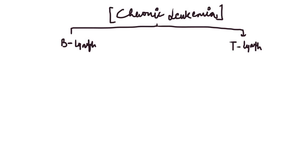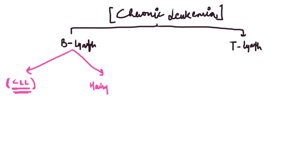From the B-lymphocytes, two types of chronic leukemias arise. These are the chronic lymphocytic leukemia, which we have already discussed in our first video — and this is the most common leukemia in adults — and the second type is the hairy cell leukemia, which we have also made a video on. So from the B-cell, there arise two types: chronic lymphocytic leukemia and hairy cell leukemia.